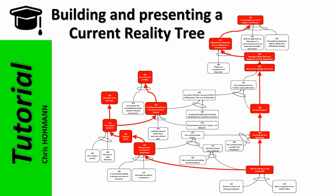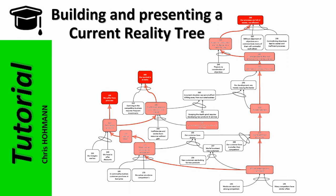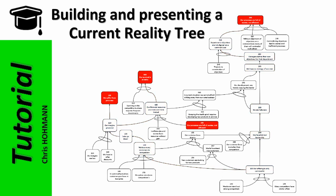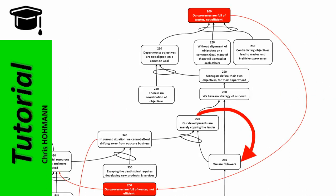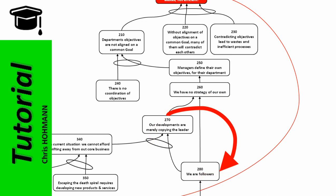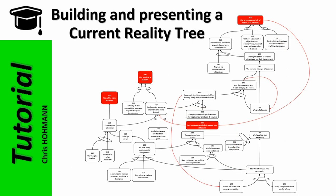There is one entity - number 180 - which is common to all branches. It is the lowest in the tree but still within the span of control of the company's management, meaning something can be done about it. This qualifies entity 180 as the critical root cause. If this cause can be neutralized, the whole tree will collapse and the undesirable effects will disappear. I'd also like to display what we call negative reinforcing loops, shown here in red. The first loop goes from entity 270 - our developments are merely copying the leader - reinforcing that the company is a follower, because the more the company copies the leader the more it confirms itself as a follower.